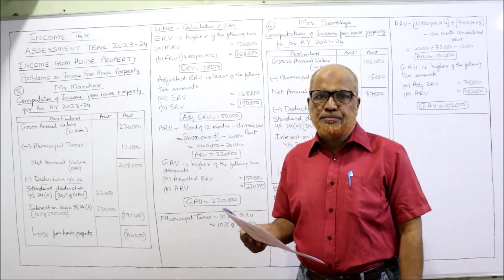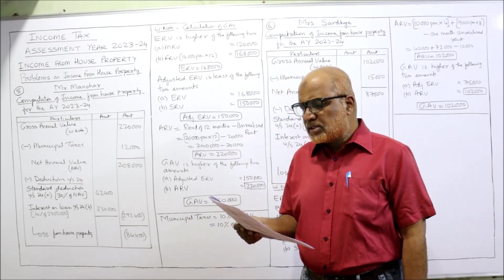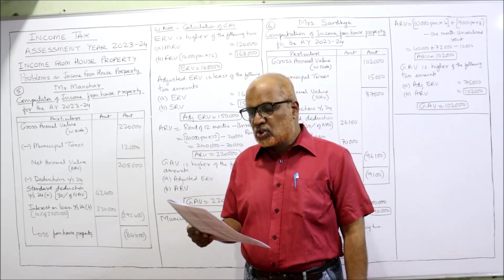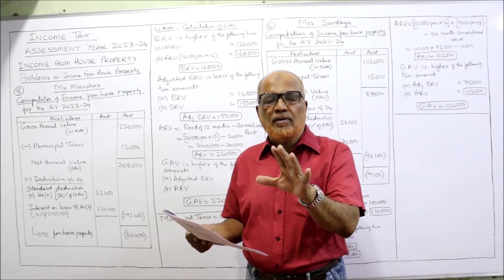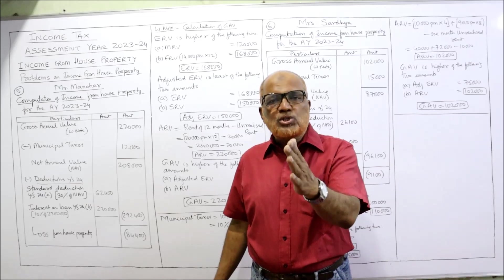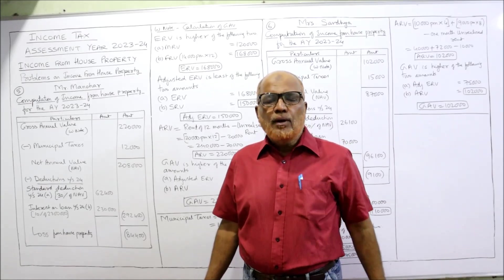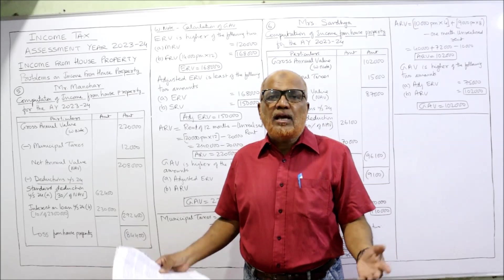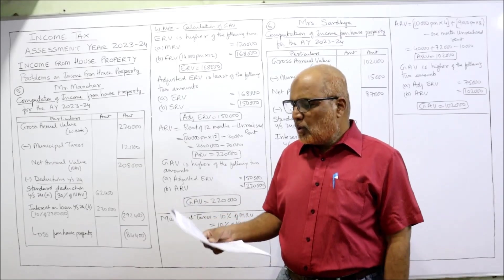Mr. K.R. Reddy could have obtained a similar house at a rent of 14,000 per month — this is the fair rental value. During the year, Mr. K.R. Reddy did not pay the rent for March and vacated the house. This is unrealized rent. There is a difference between outstanding rent and unrealized rent: outstanding rent means rent is due but will be paid in future, while unrealized rent means the tenant has not paid and has vacated — it is not realizable, it's a bad debt.